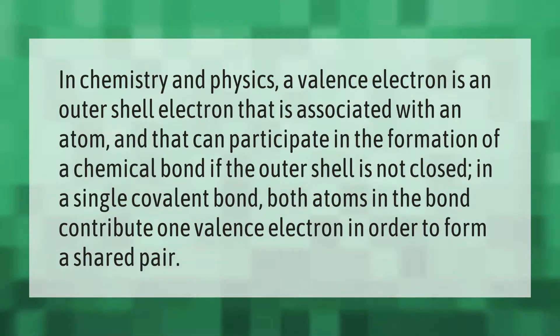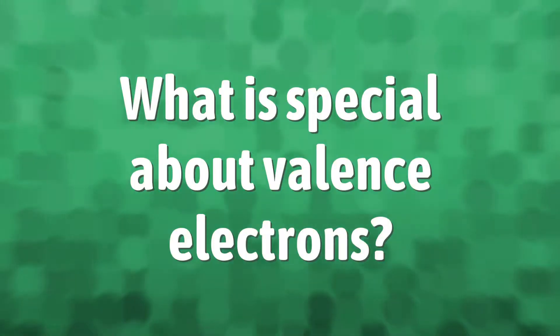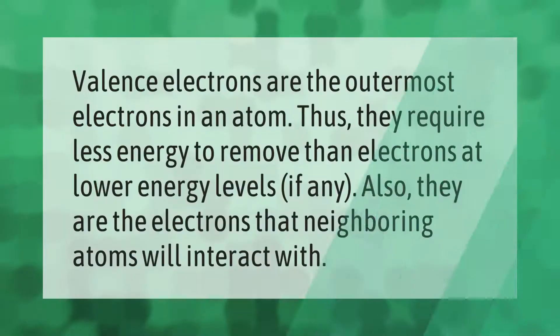Valence electrons are the outermost electrons in an atom. Thus, they require less energy to remove than electrons at lower energy levels, if any. Also, they are the electrons that neighboring atoms will interact with.